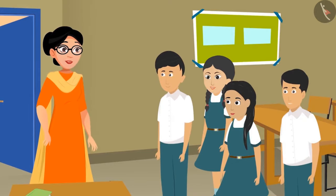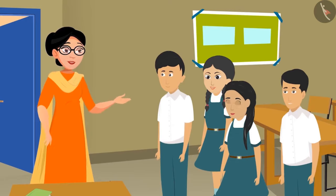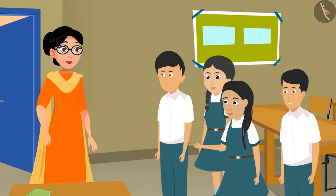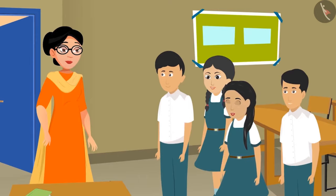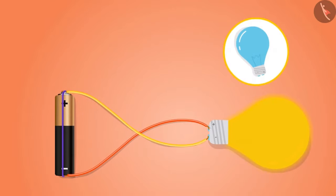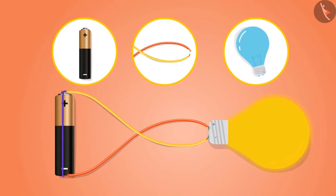'Sunaina, how did the bulbs in your group turn on?' 'Didi, we connected the plus sign of the cell with the minus sign of the bulb with the help of a wire. This caused our bulb to turn on. When all the things - bulbs, wires, and batteries - are arranged properly, it makes a way for electricity to pass.'